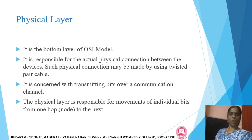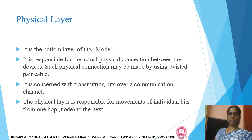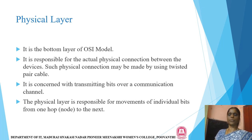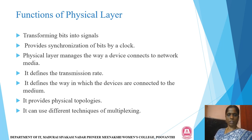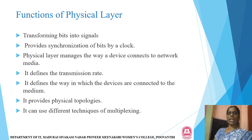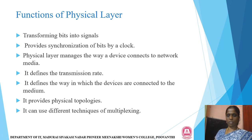The physical layer is the bottommost layer in the OSI model. It is responsible for the actual physical connection between devices, such as a twisted pair cable. It is concerned with transmitting bits over a communication channel and is responsible for the movement of individual bits from one node to the next. Functions of the physical layer include: transforming bits into signals, providing synchronization of bits by a clock, managing how a device connects to network media, defining the transmission rate, defining how devices are connected to the medium, providing physical topologies, and supporting different multiplexing techniques.